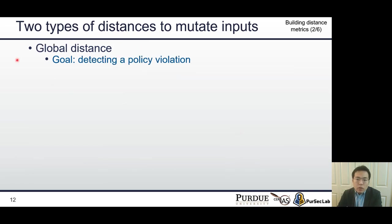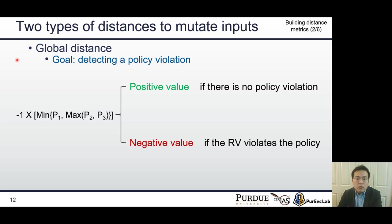Next, we need to build a global distance by merging all propositional distances. This global distance is for detecting a policy violation. If the RV's current state does not violate any policy, the global distance will return a positive value. On the other hand, when the current state violates a policy, this distance will return a negative value.